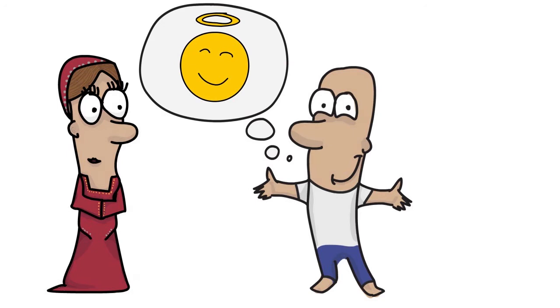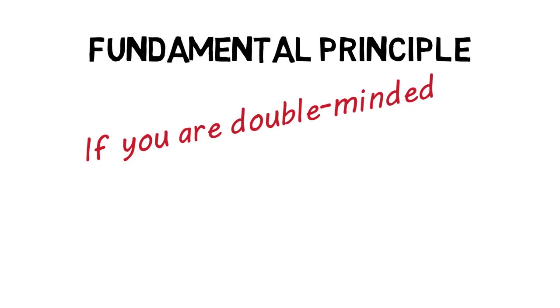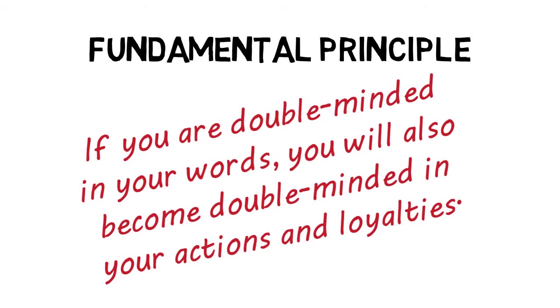You not only become less easy to understand, but difficult to rely on. Those around you will quickly become incompatible. So the lesson here is, if you are double-minded in your words, you will also become double-minded in your actions and your loyalties.